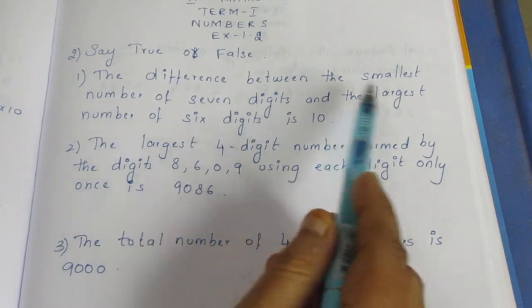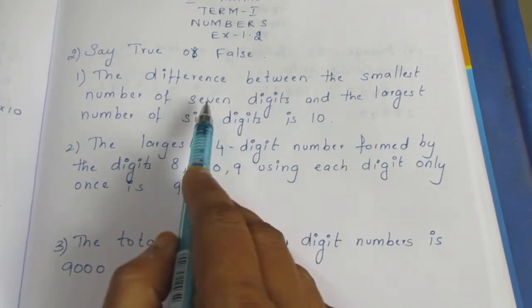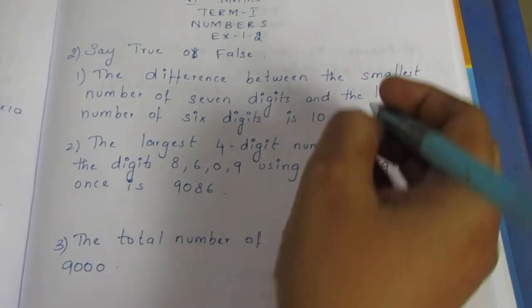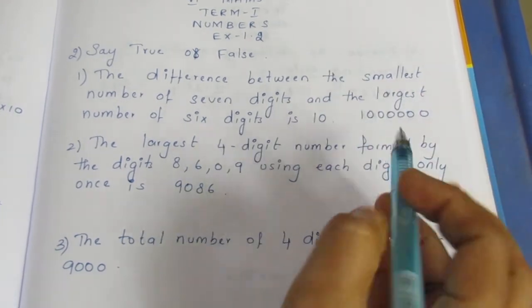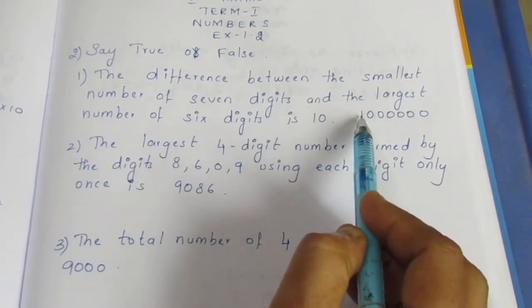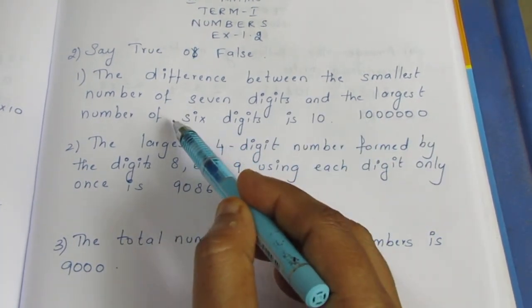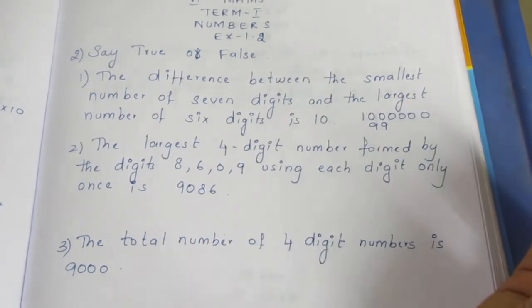The smallest 7-digit number and the largest 6-digit number. The smallest 7-digit number has 1 followed by 6 zeros: 1,000,000. Now, the largest 6-digit number has all 9s: 999,999.